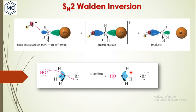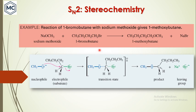If you start with an R-configured molecule, you get an S-configured product. For example, the reaction of (R)-1-bromobutane with sodium methoxide gives (S)-1-methoxybutane. The nucleophile forms a transition state and the configuration is completely inverted. This is pointing towards you in the starting material and pointing away from you in the product — completely inverted.